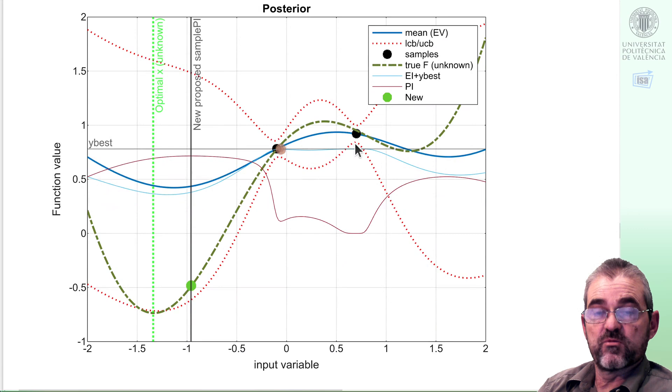In fact the maximum probability of improvement is 72% so there's a lot of chance of improvement. Then the Bayesian optimization loop consists of course in just repeating, adding this green to the black historical record, computing posterior again, computing acquisition function, etc.